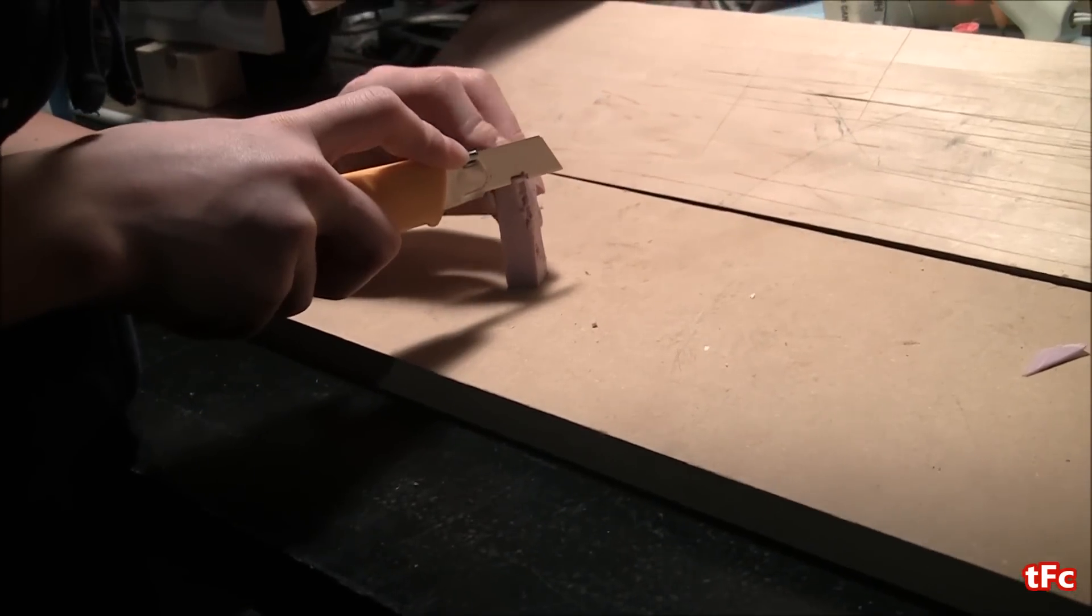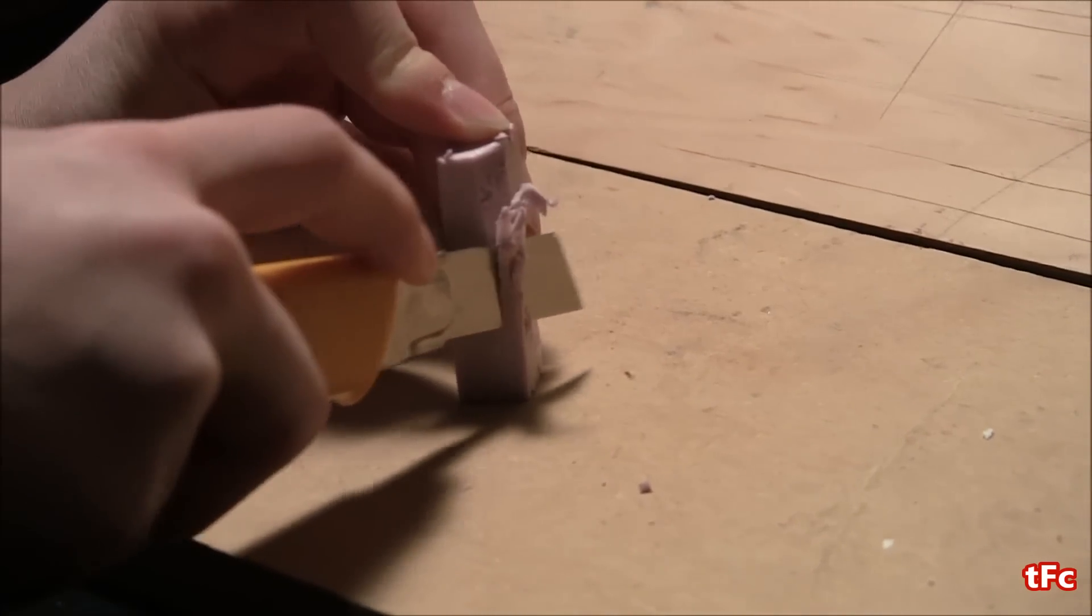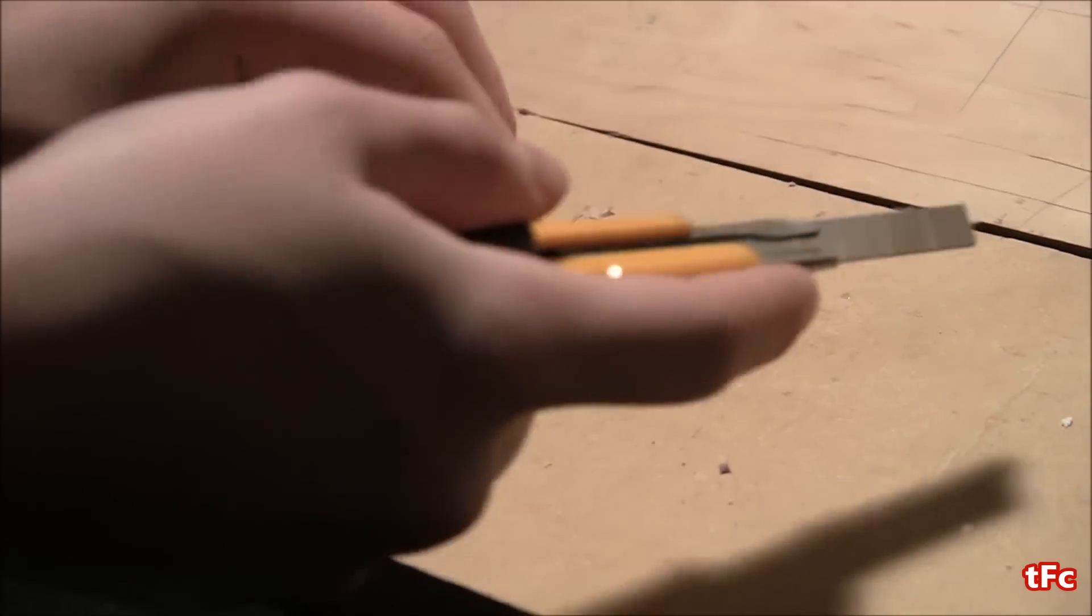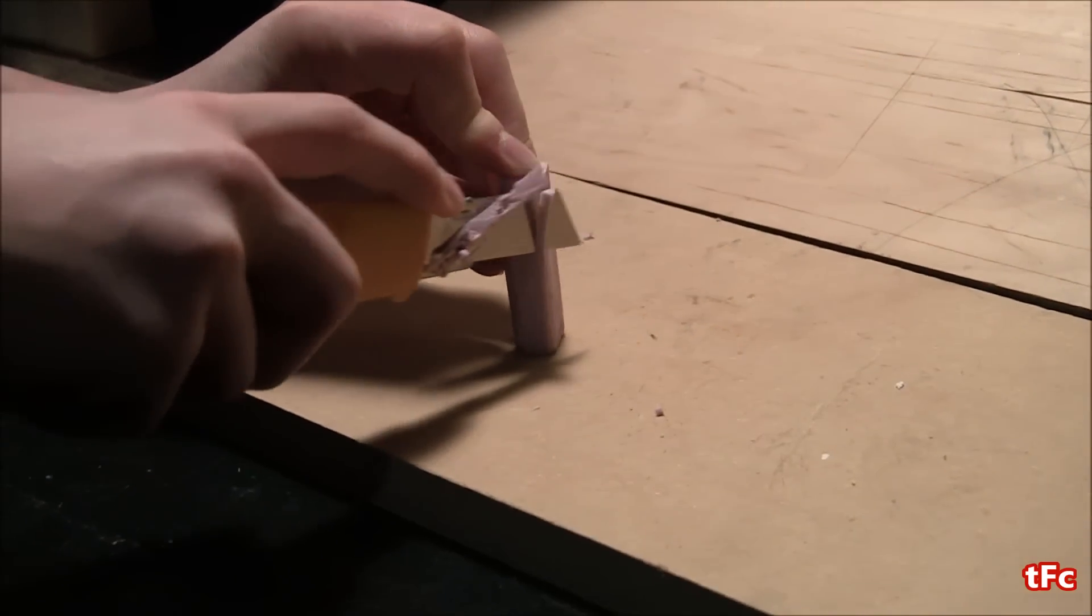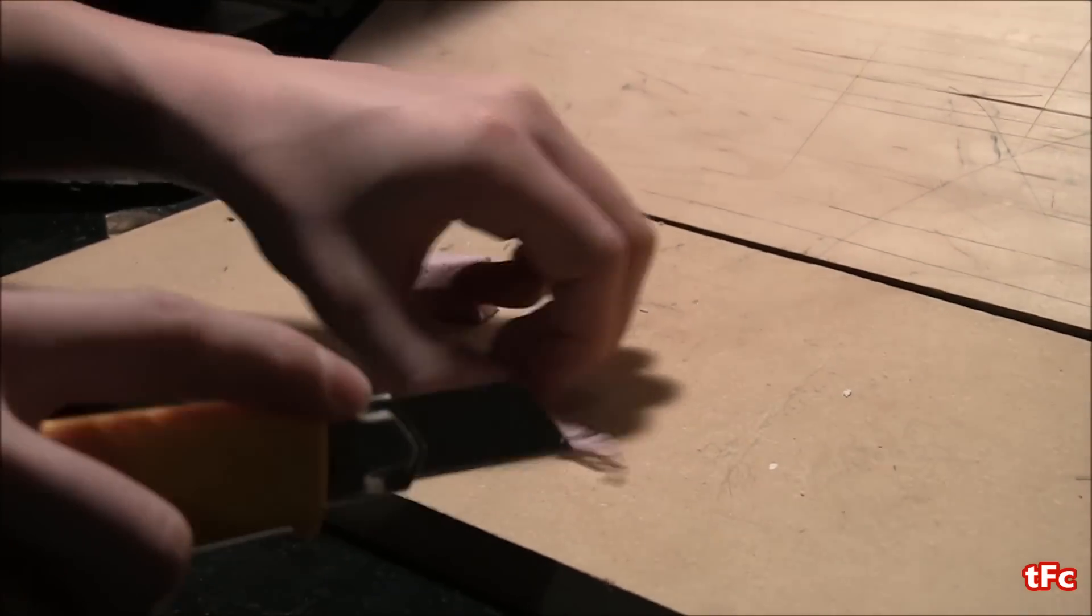Alright guys, so the first thing we got to do is make the hammer out of foam. So I'm starting by making the handle for it. To do this I'm basically just taking a rectangular piece of foam and cutting all the corners off. And then I'm going to sand it down just to make it nice and smooth.